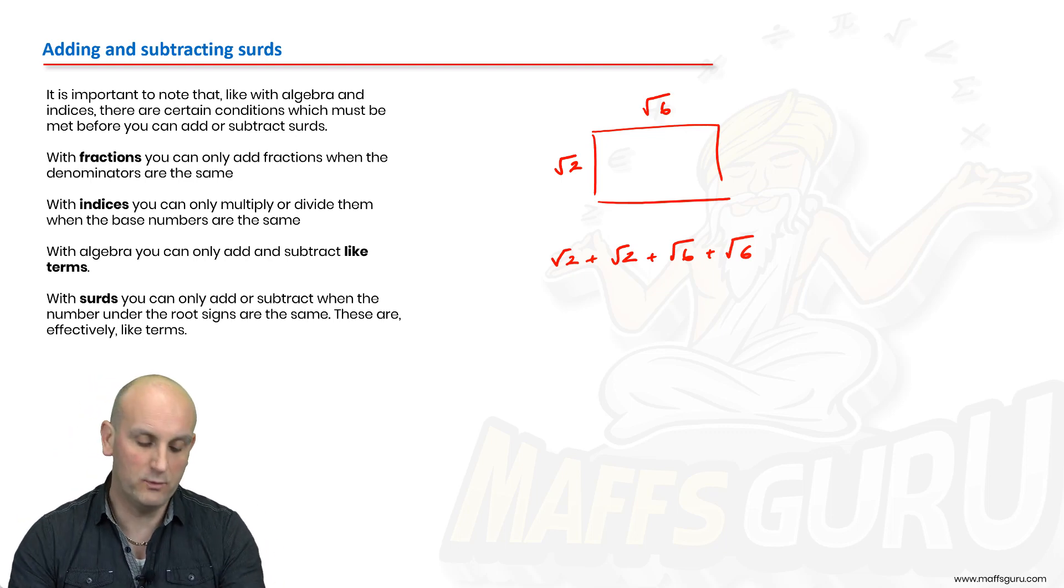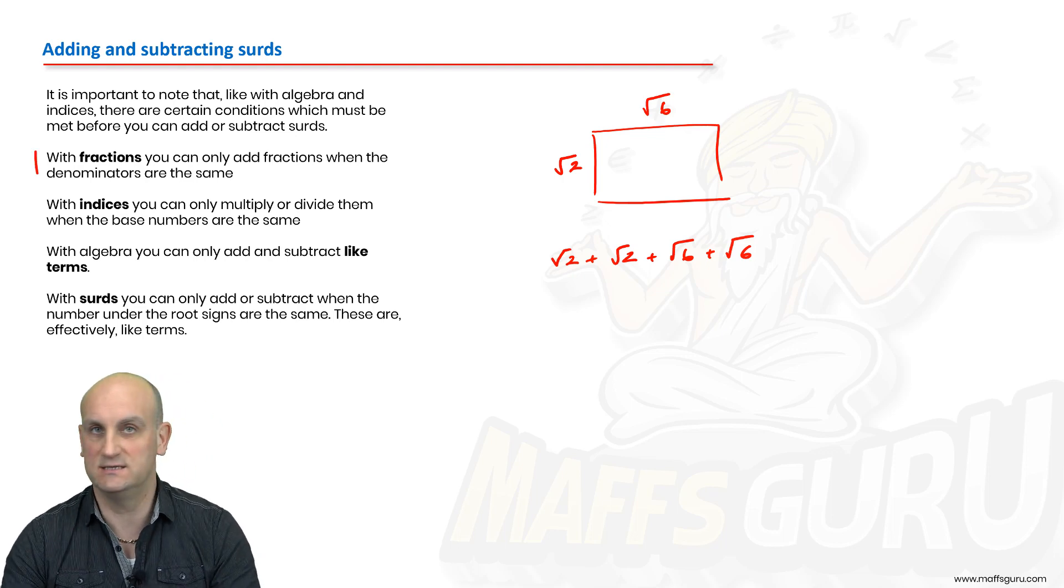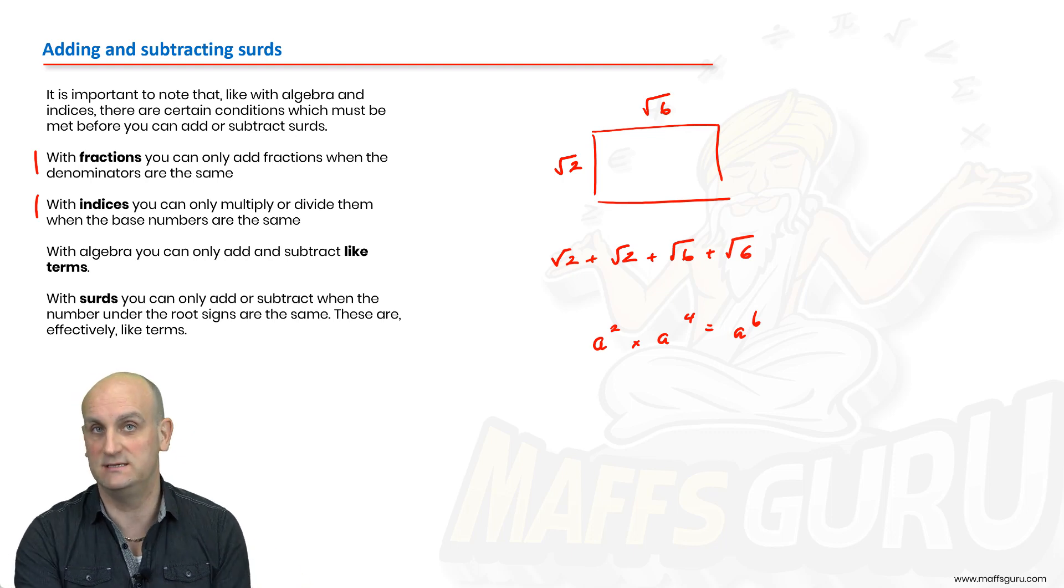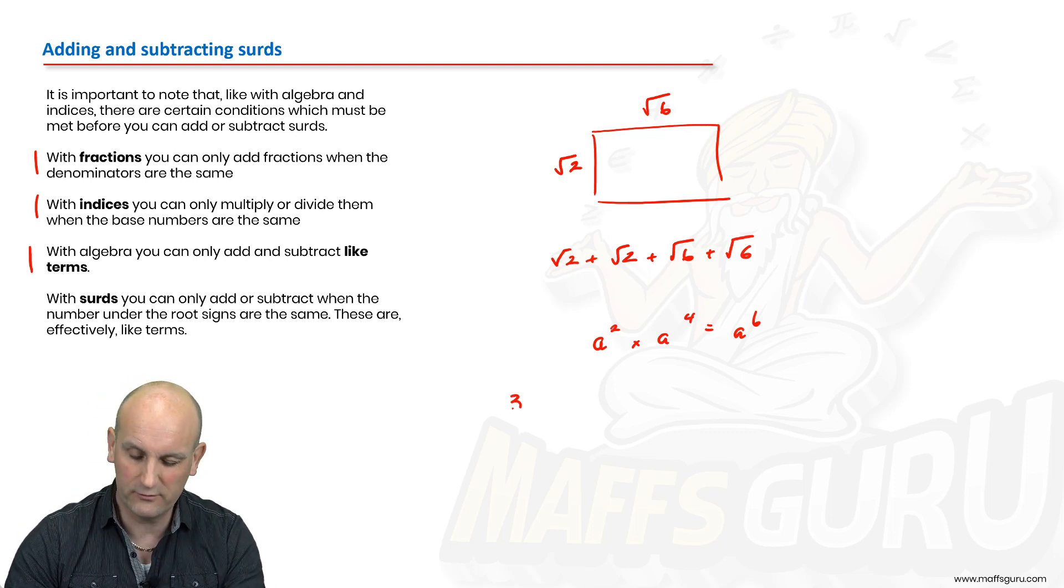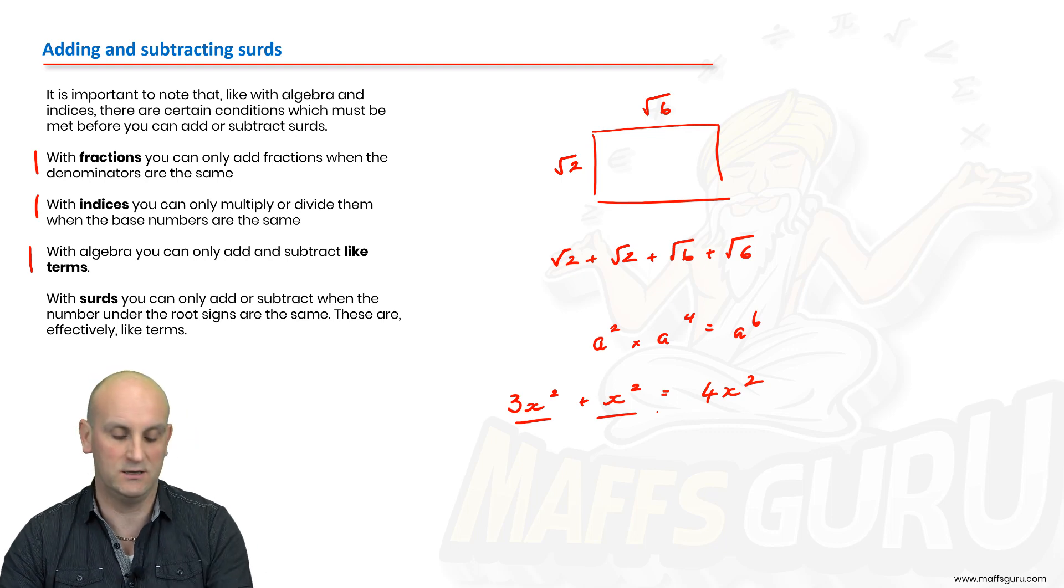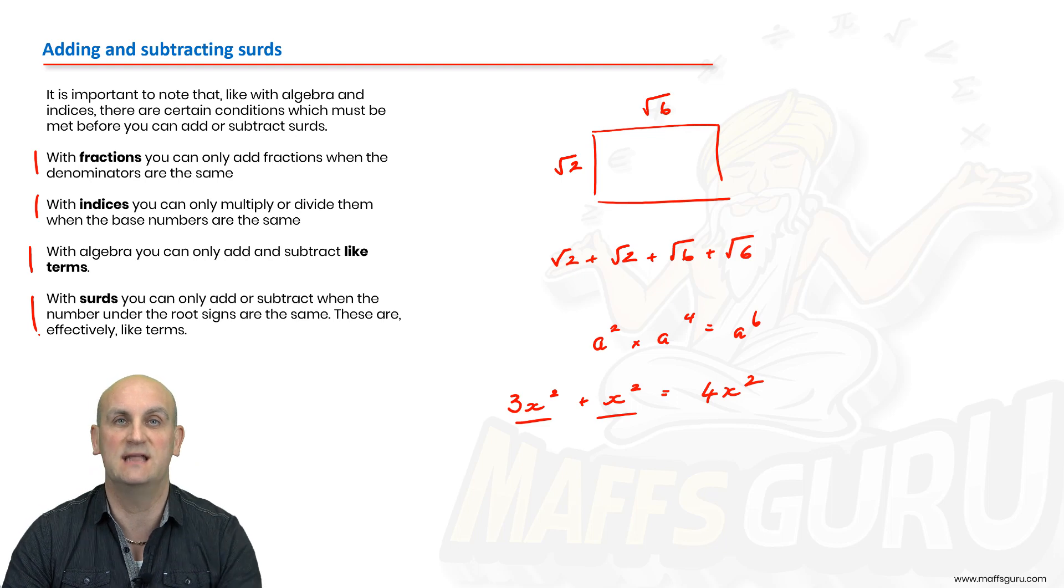Well, if you remember, with fractions, we can only add fractions when the denominators are the same. With indices, if we have something like a squared multiplied by a to the power of 4, that became a to the power of 6 because the rule stated, if the bases were the same and we were multiplying, then you would add the powers. With algebra, you could only add and subtract like terms. So if I had 3x squared plus x squared, that became 4x squared. And believe it or not, surds very much operate on the same lines as that. If they are a like surd, then we can add and subtract them.